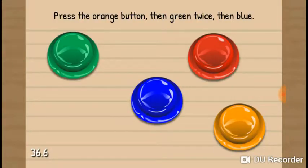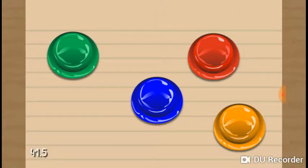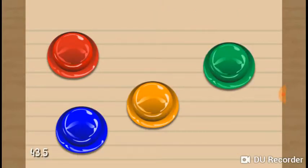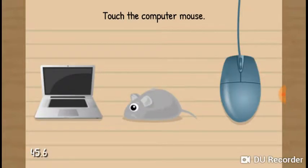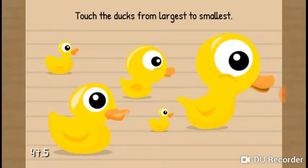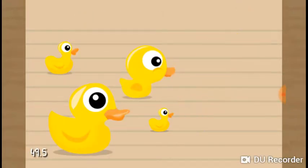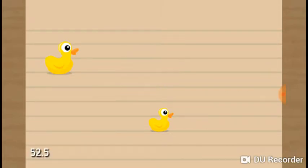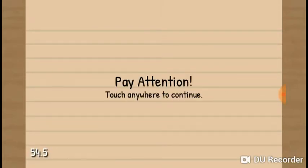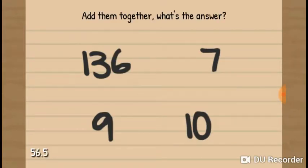Yay, I have a pulse! Press the orange button and green twice, and blue, orange, green. Trick me - green, blue. Touch the computer mouse, touch the duck's largest, drop the phone, largest to smallest: one, three, five. Add them together, it's nine.